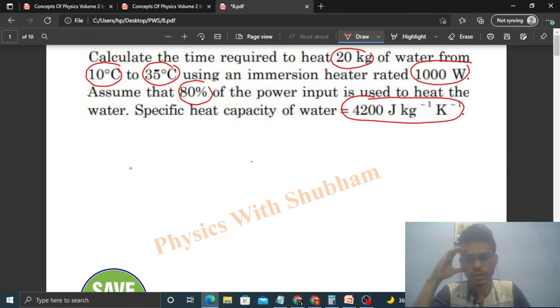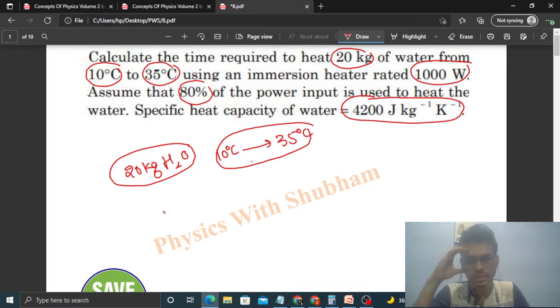So we have 20 kilogram water and temperature increase from 10 degrees Celsius to 35 degrees Celsius. So how much heat required? That is mc delta t. Mass 20, specific heat capacity of water is given, that is 4200, and how much temperature increase?